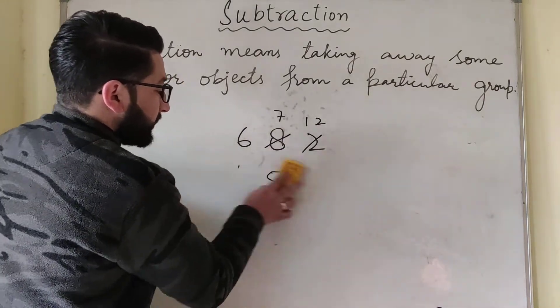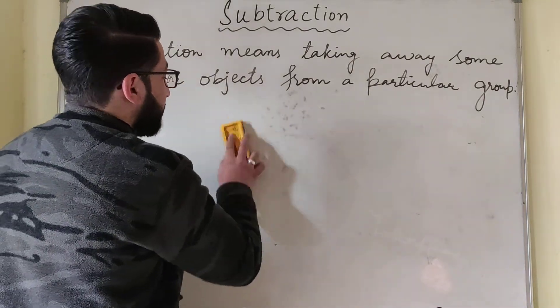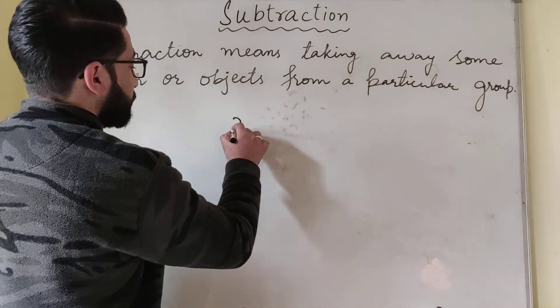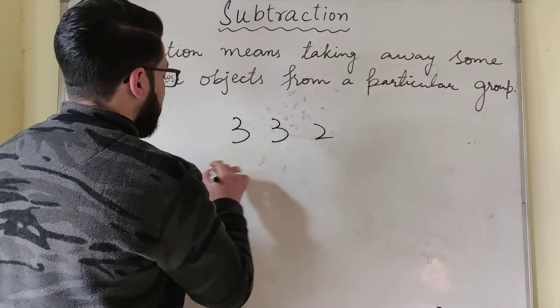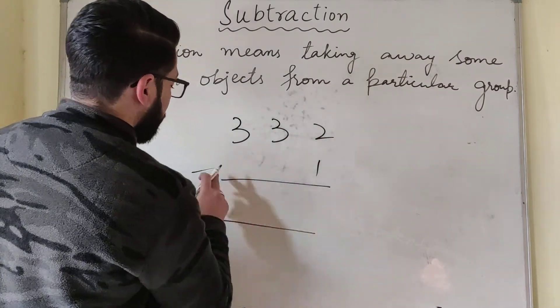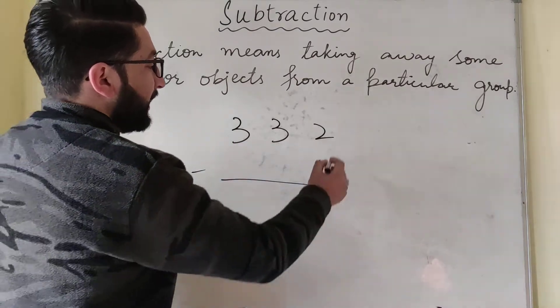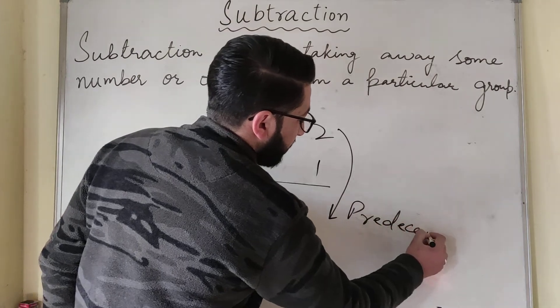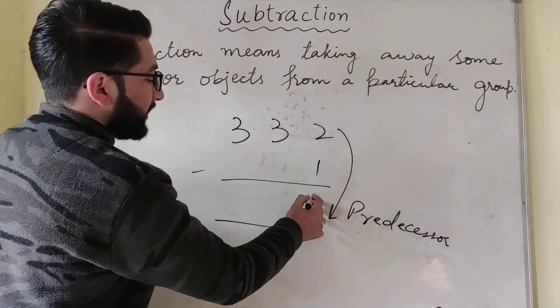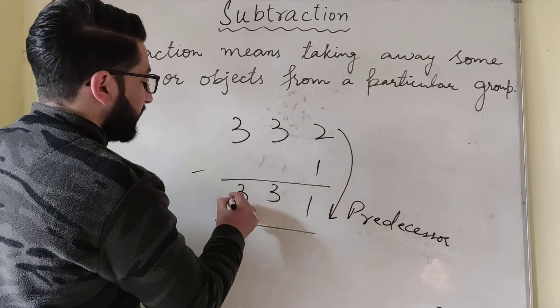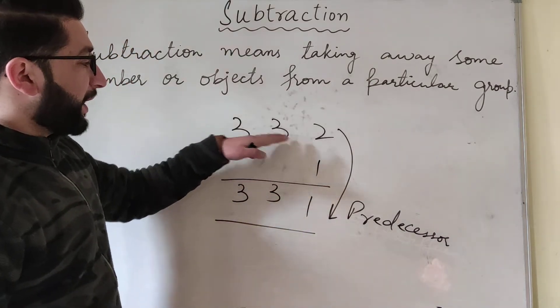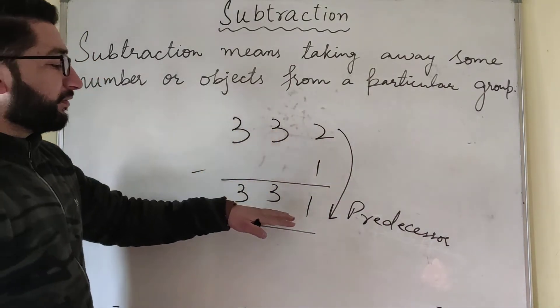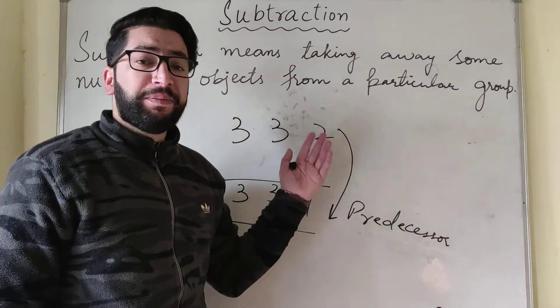Same is the case with subtraction as that was with addition. If we subtract 1 from a given number, suppose we have 332 and we have to subtract 1 from it, whenever we subtract 1 from a given number it gives us the predecessor of the given number. So 2 minus 1 is 1. If we move one step backwards from number 332, that will be 331. When we subtract 1 from a particular number, we get the predecessor of that number.